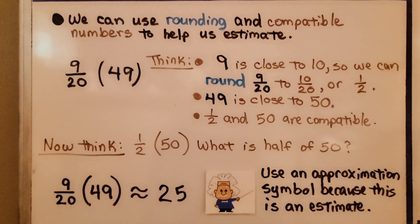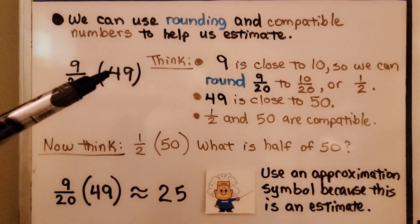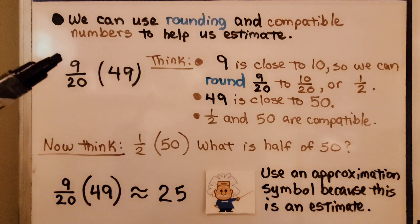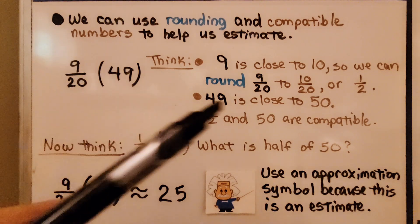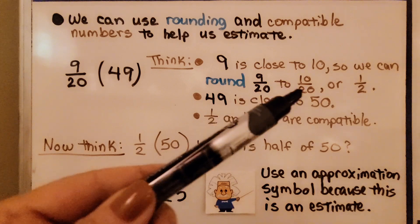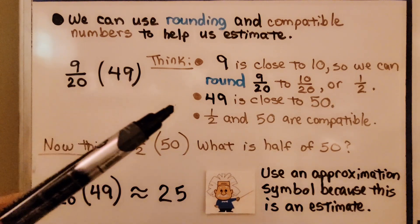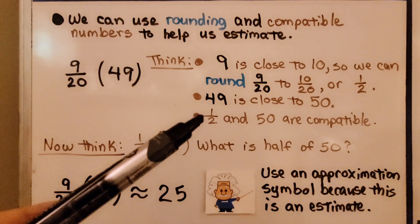We can use rounding and compatible numbers to help us estimate. Here we have 9/20 times 49, so we think 9 is close to 10, so we can round 9/20 to 10/20, which is 1/2. 49 is close to 50, and 1/2 and 50 are compatible.